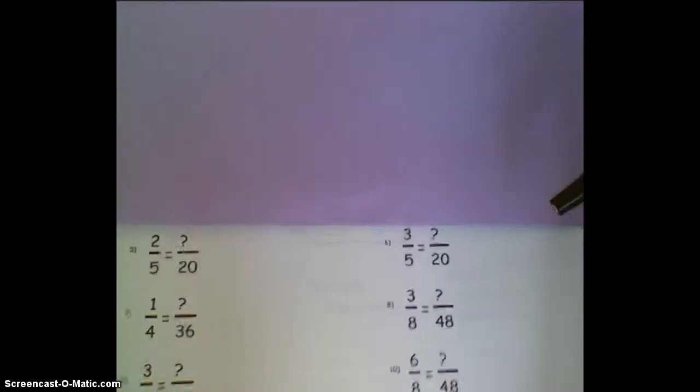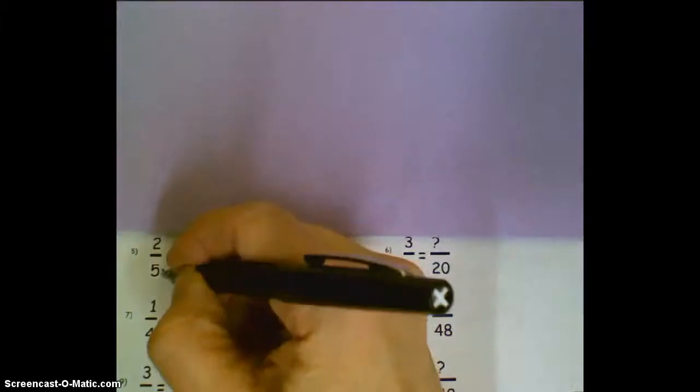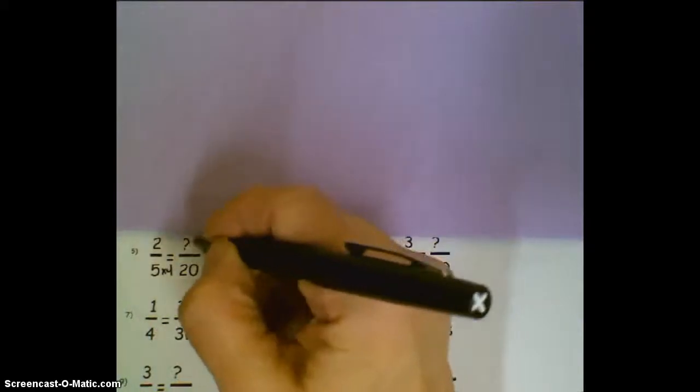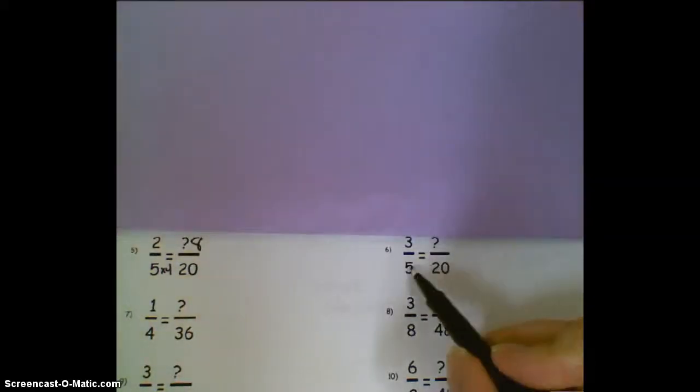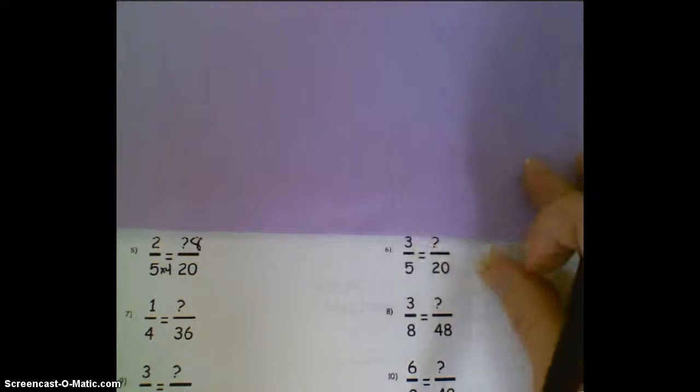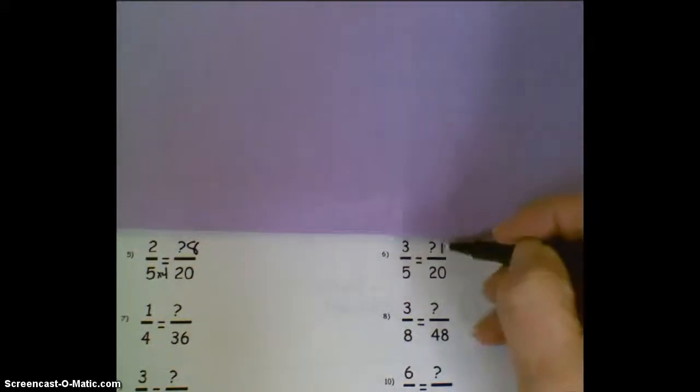Next, we've got 5 times 4 is 20, so 2 times 4 would be 8. 5 times 4 is 20, and 3 times 4 this time would be 12.